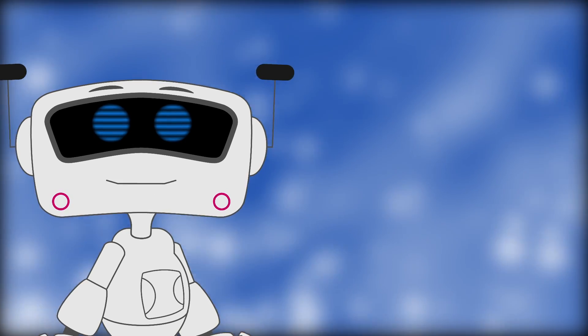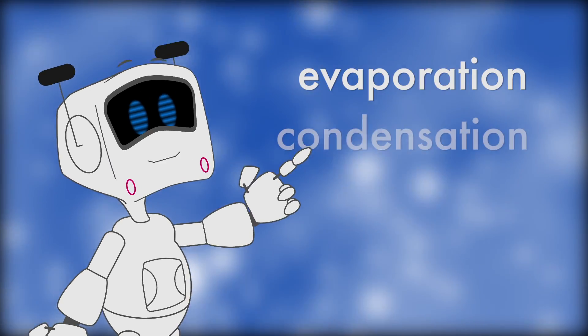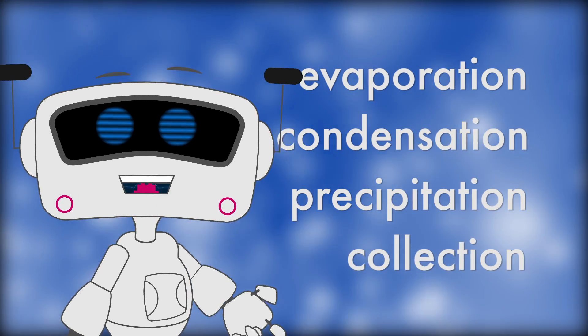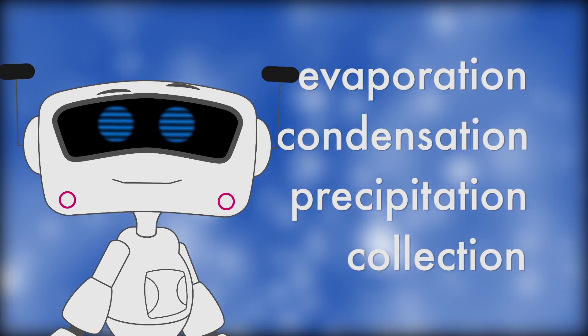The water cycle has four parts, called evaporation, condensation, precipitation, and collection. Wow, those are big words. Let's break it down.